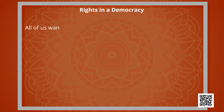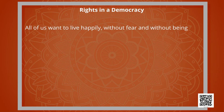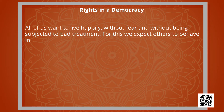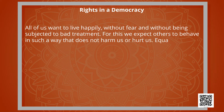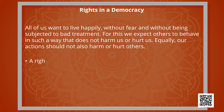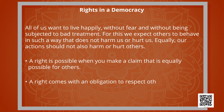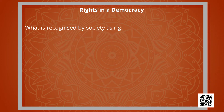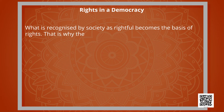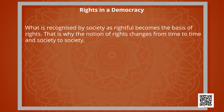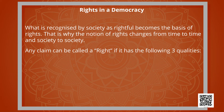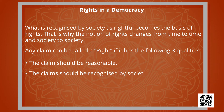Rights in a democracy: all of us want to live happily without fear and without being subjected to bad treatment. We expect others to behave in such a way that does not harm or hurt us, and equally, our actions should not harm or hurt others. A right is possible when you make a claim that is equally possible for others. A right comes with an obligation to respect others' rights. Any claim can be called a right if it has three qualities: the claim should be reasonable, recognized by society, and sanctioned by law.